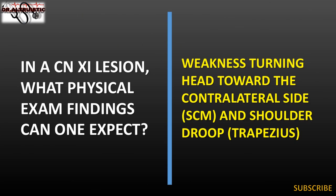In a CN-11 lesion, what physical exam findings can one expect? Weakness turning head toward the contralateral side, SCM, and shoulder droop, trapezius.